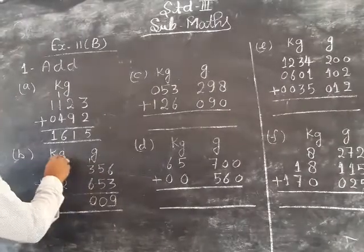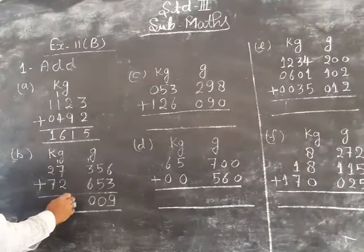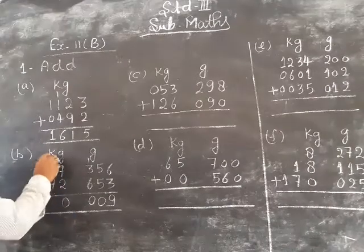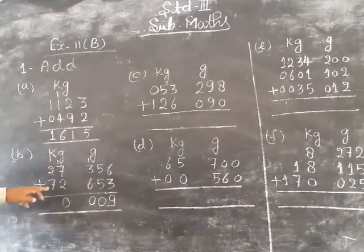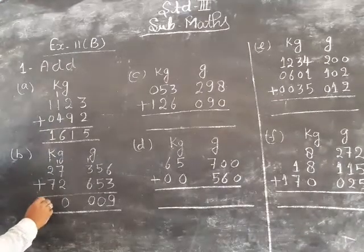Carry 1. 7 plus 9 plus 1, 10 to 0. Carry 1. 7 plus 9 by 10.